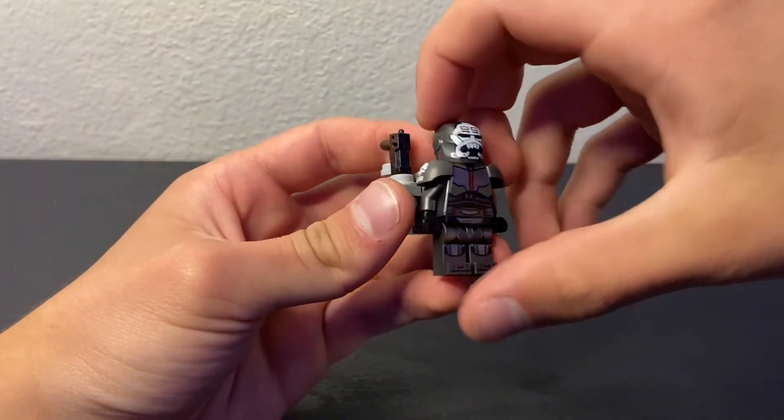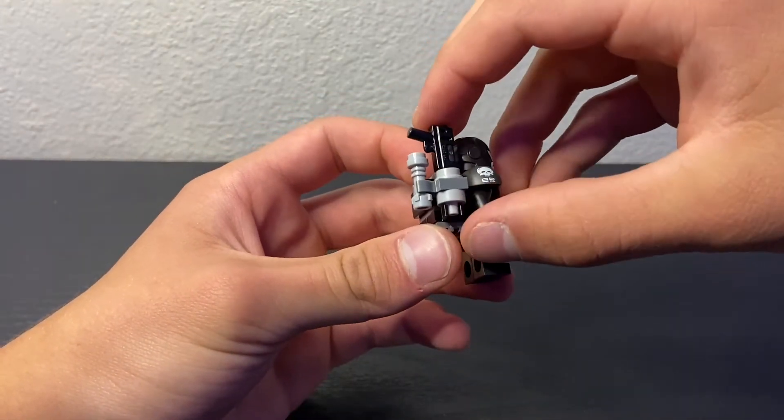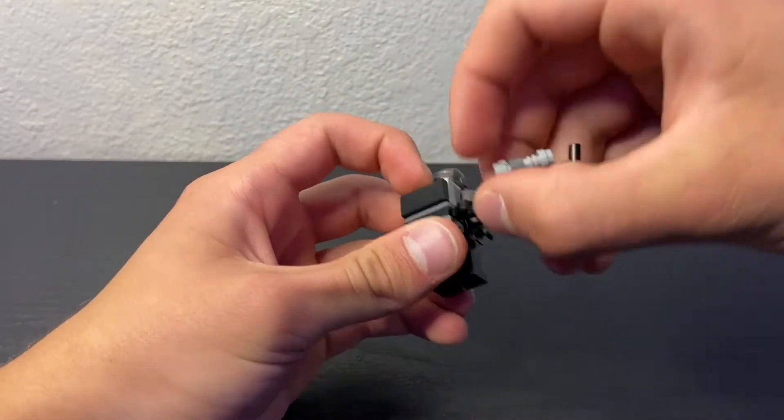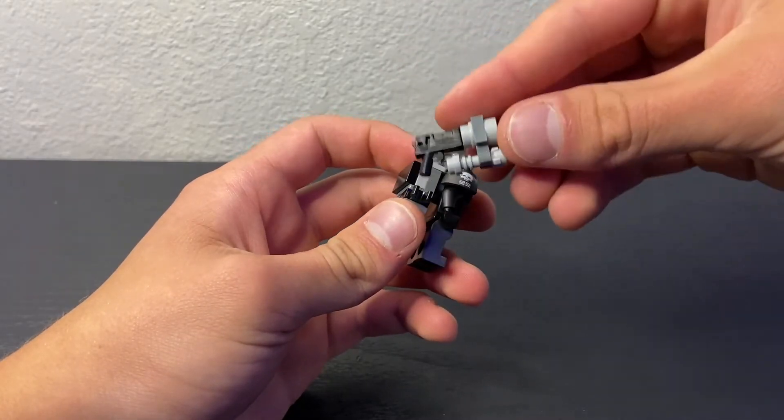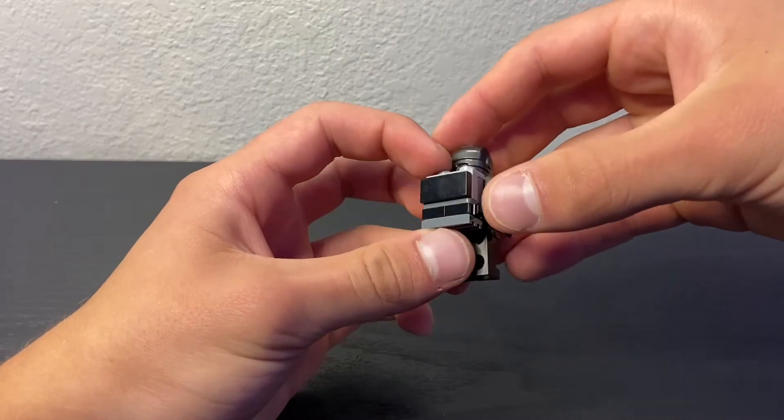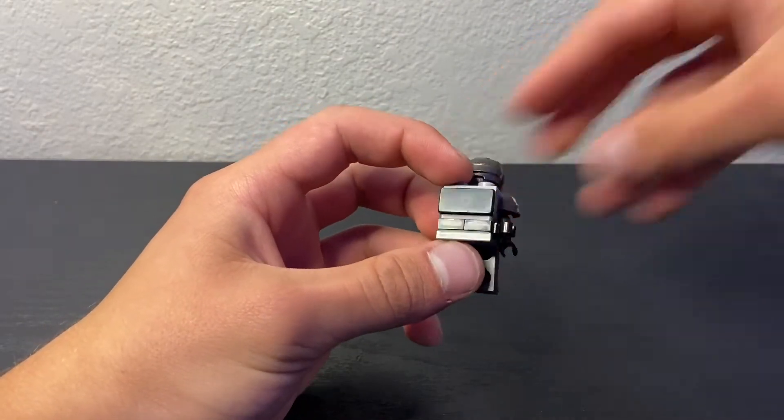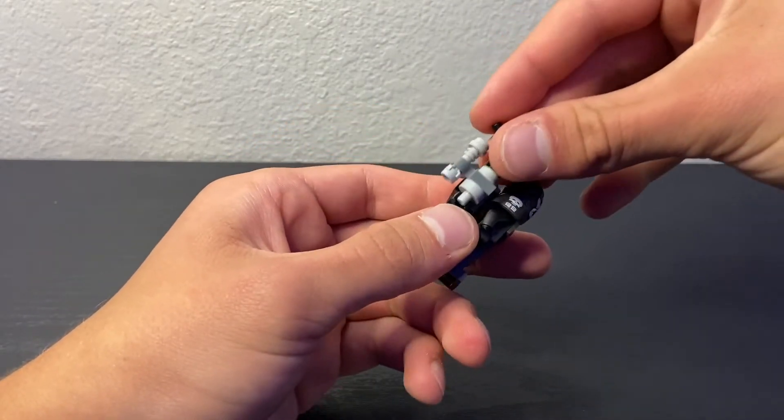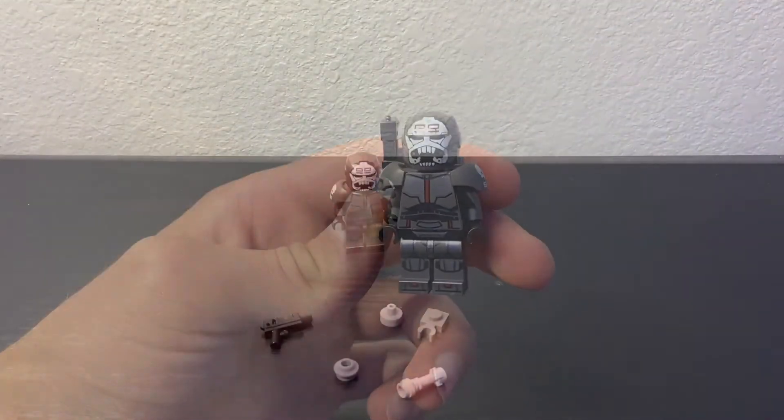Next up, we have Wrecker. I went ahead and built Wrecker a bit more of an accurate gun to the show. It looks a whole lot better than the one that he originally had. And then I went ahead and also built a backpack for him to also carry his gun on on the side. So let's take a look at that.